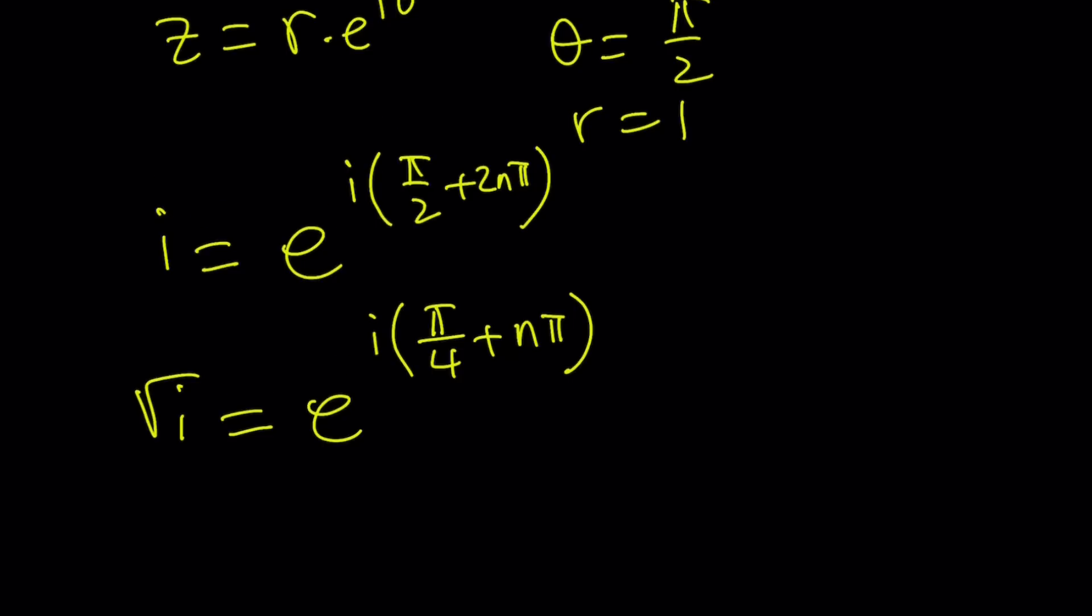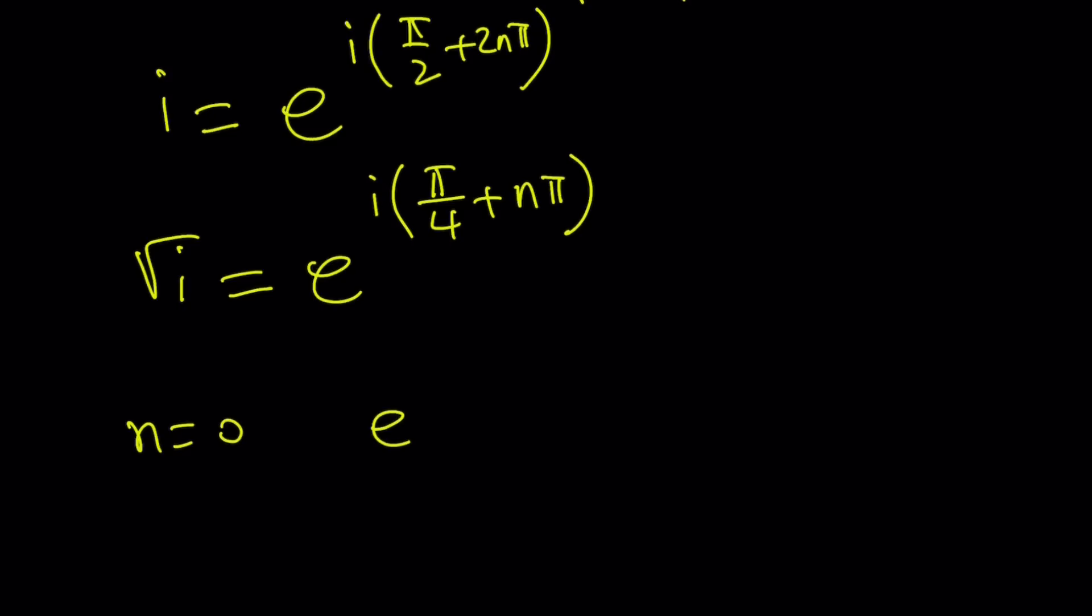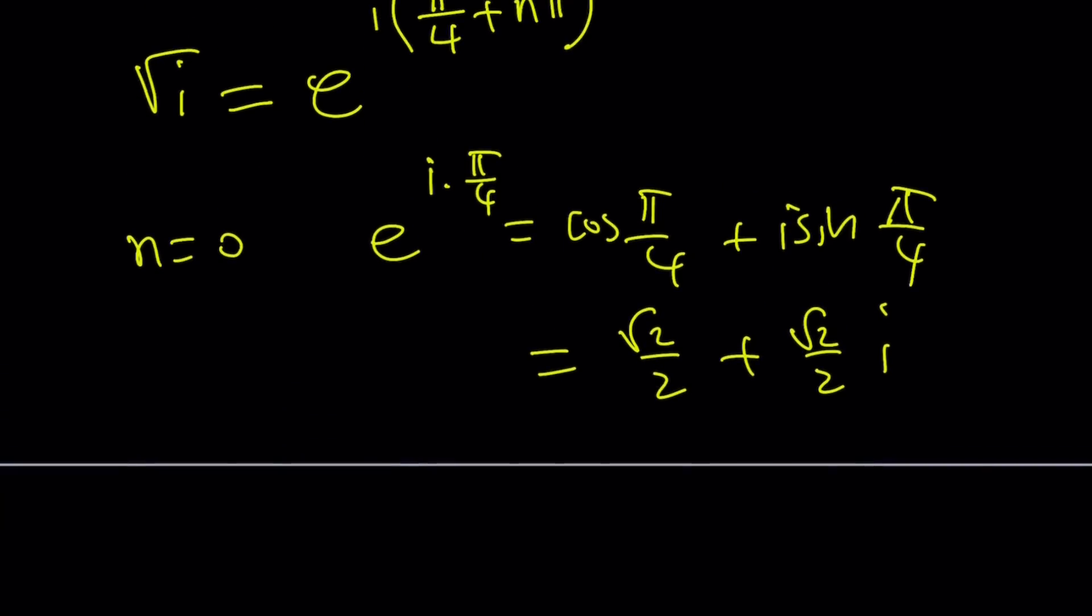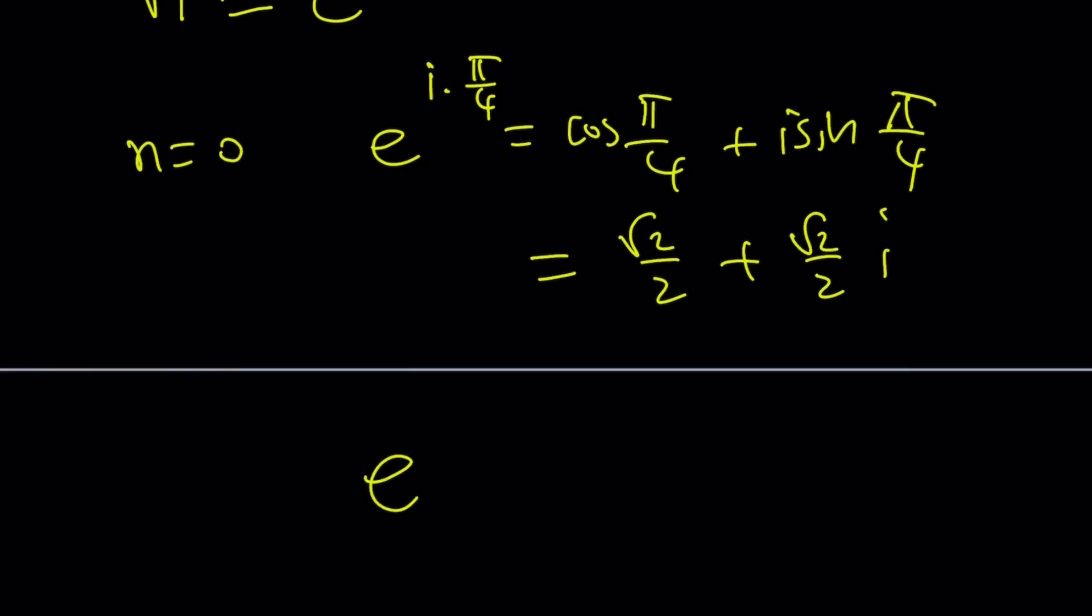And what is that number? What does that number represent? For n equals 0, this is e to the power i pi over 4. You can also write it as cosine pi over 4 plus i sine pi over 4, which is root 2 over 2 plus root 2 over 2i. And the other one is just the opposite because we're going to be using 5 pi over 4, e to the power i times 5 pi over 4. That is going to be cosine blah blah. Let me just skip that part and write the answer directly so that we can be done with this real quick.